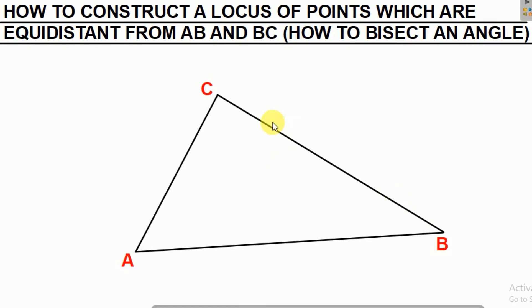We're going to check the letter that is common. We have side AB and we have side BC, so side B is common. Therefore, we need to bisect angle B.